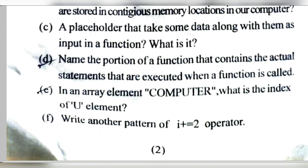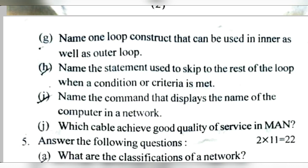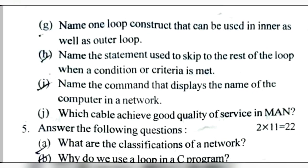Number F — Write another pattern of i plus equal to: the short form is i+=. Number G — Name one loop construct that can be used as both inner and outer loop. I think it can be a for loop or while loop, but I have confusion — if someone knows, please write in the comment section.